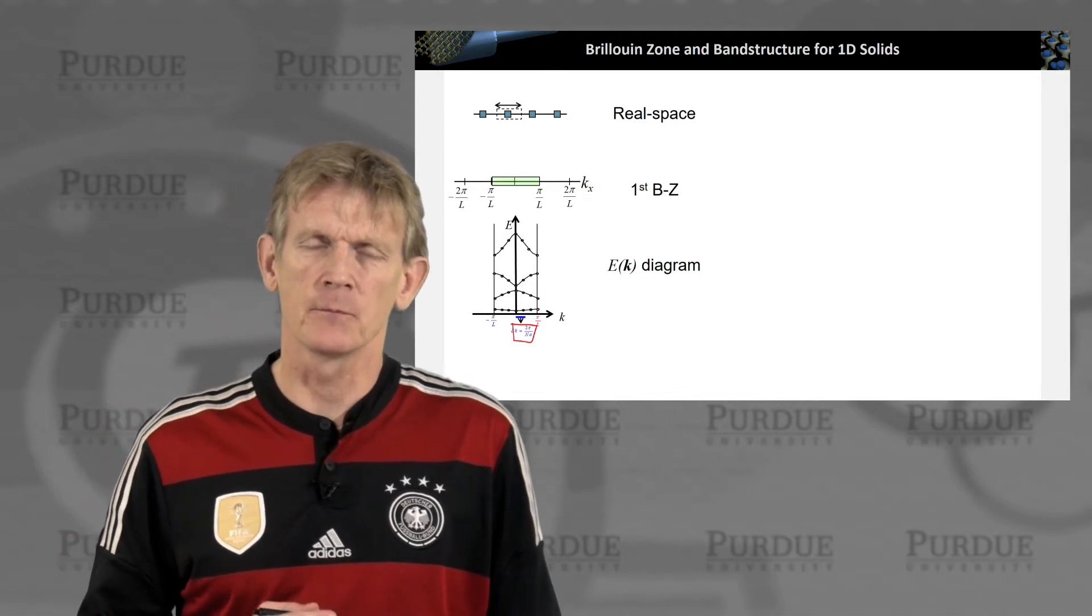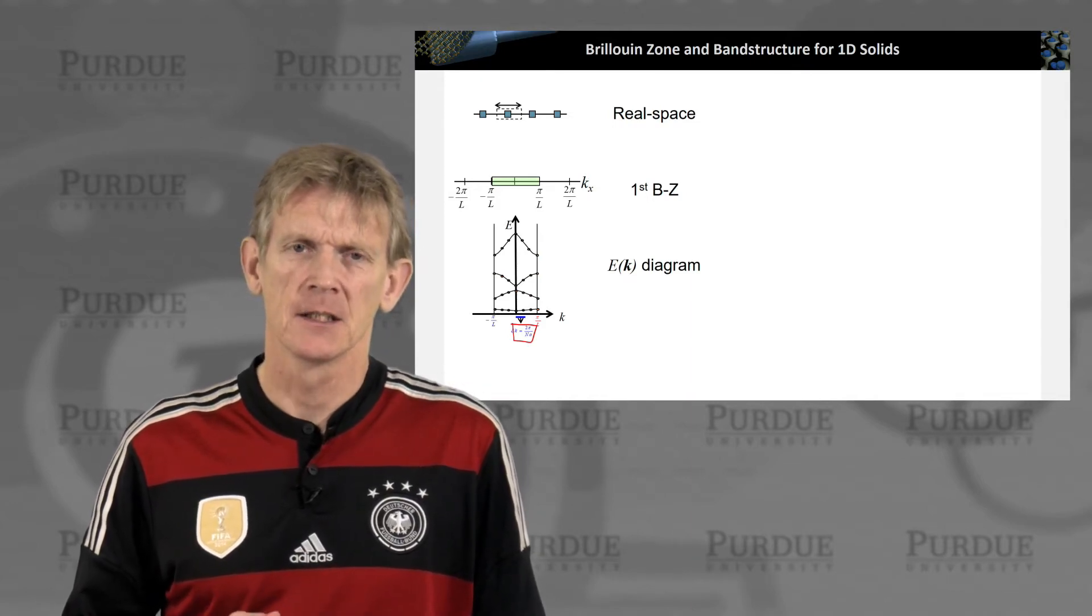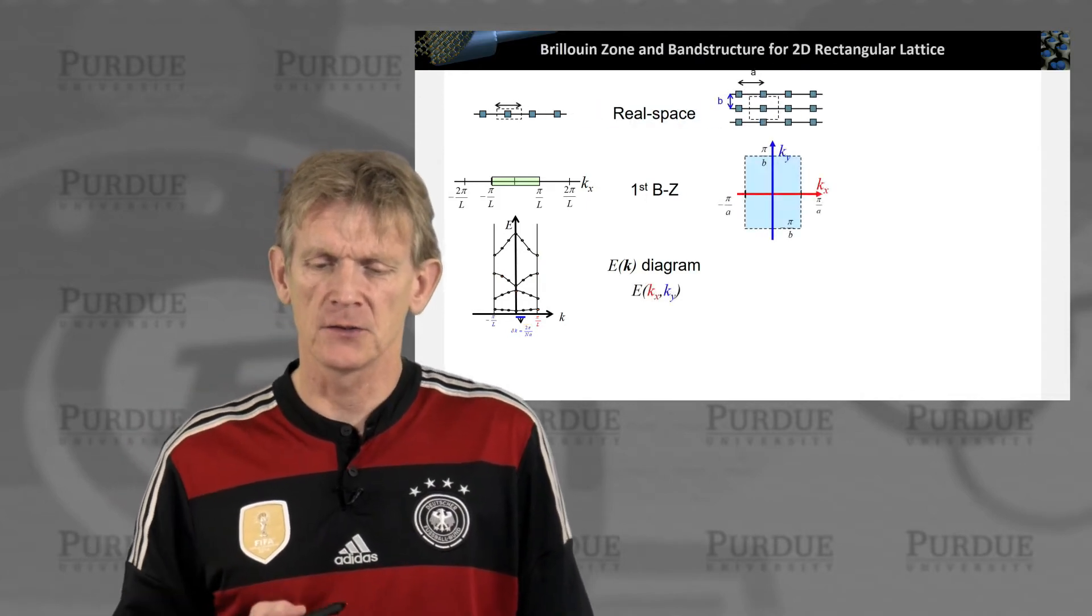We computed states, and each band had n states. In this case here, we have four bands. Now, as we expand this into two dimensions, we will get something similar.